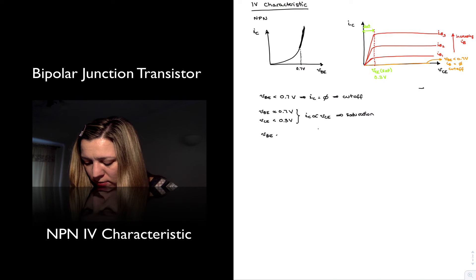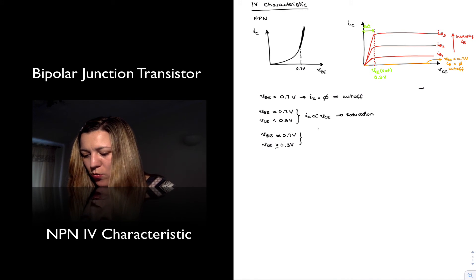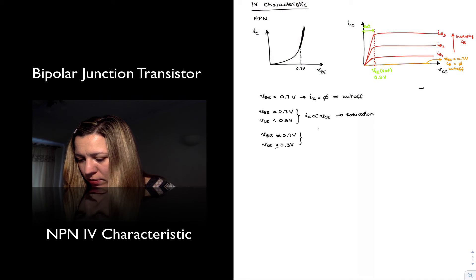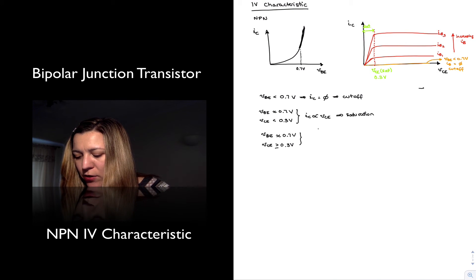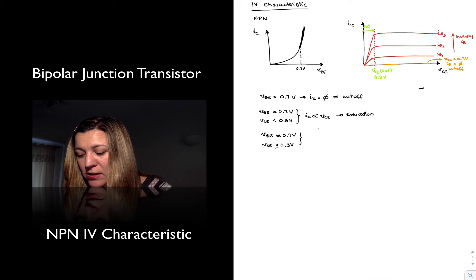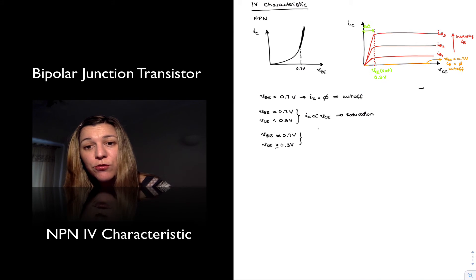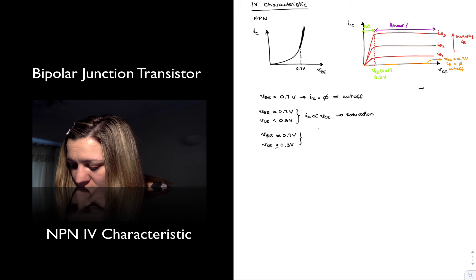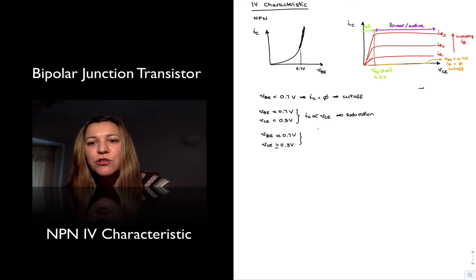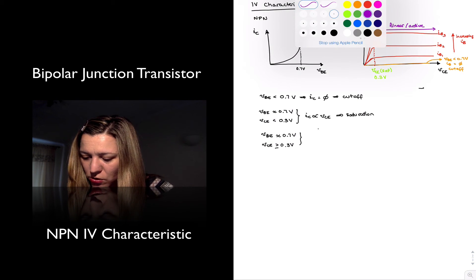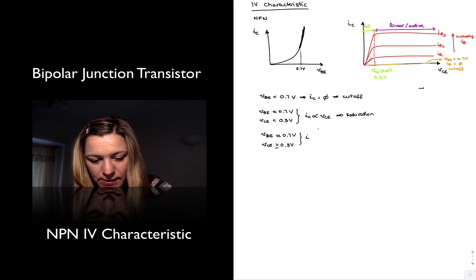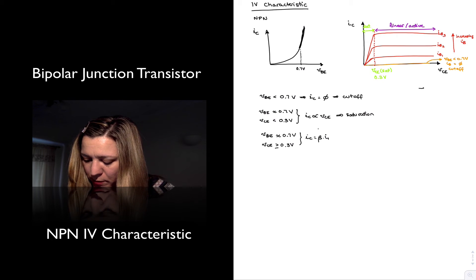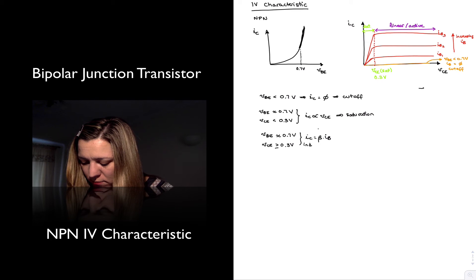Once VCE increases past the saturation voltage, the current is independent of VCE — it's a constant value for any given value of IB regardless of VCE. We call this the linear active region, also called the forward active region. In this region, IC equals beta times IB, meaning it is independent of VCE.